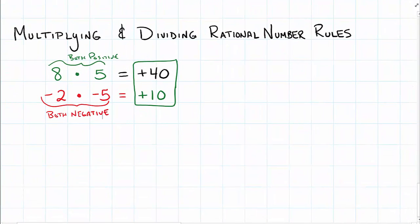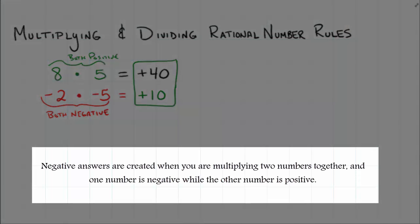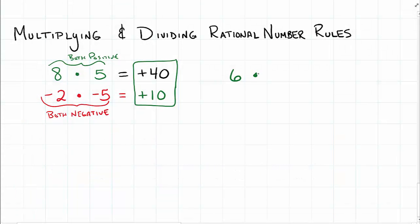Negative answers only happen when we have one negative sign. So if we start off with, let's say, positive 6 and we multiply positive 6 times a negative number, any negative number, we're going to get a negative answer. 6 times 1 is 6, so we're going to have a negative 6 as our answer.